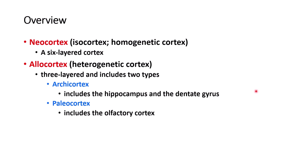There are two ways to divide this. One is called the neocortex, also called isocortex or homogenic cortex, and from a histology point of view it has six layers, which I will show you in the next slide. The other one is called allocortex or heterogenic cortex, and it has only three layers.